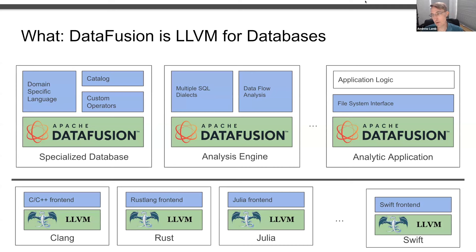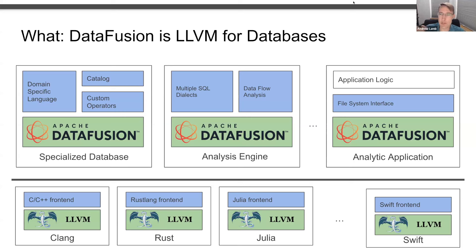The reason LLVM is important is because building a modern language system requires things like a debugger, an optimized code generator, and all the standard optimizer stuff. It's a huge amount of work, but it's not really differentiating for your particular language. I think the reason we've seen a bunch of new innovative languages recently is because they've been able to share the same underlying infrastructure that's not differentiating.